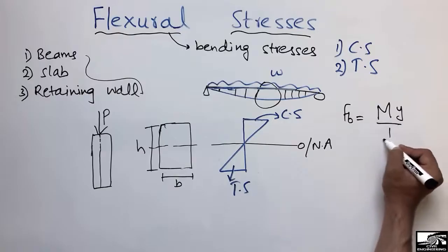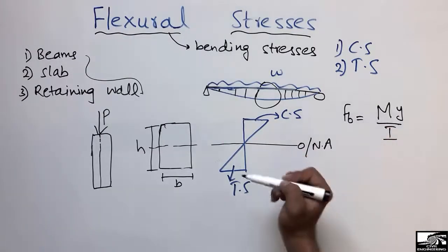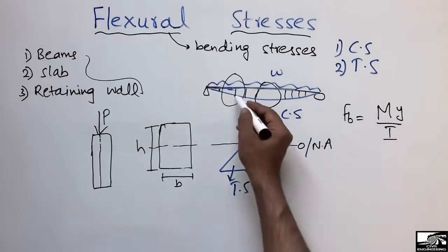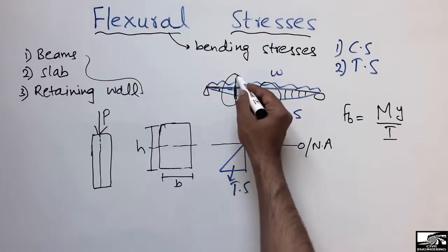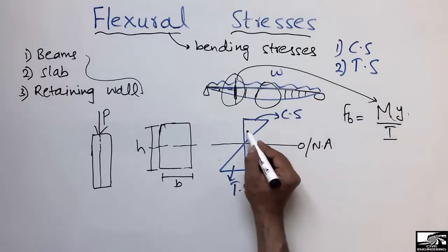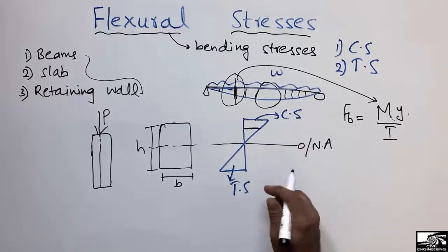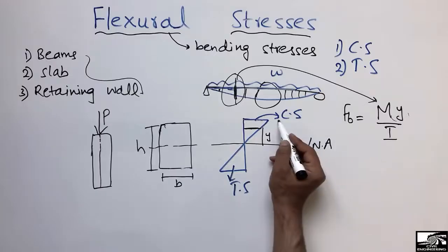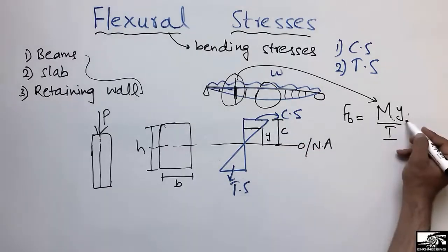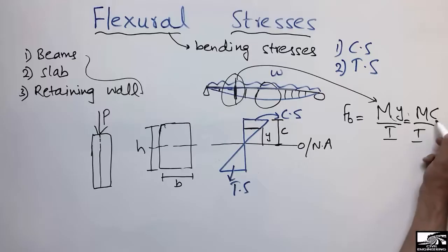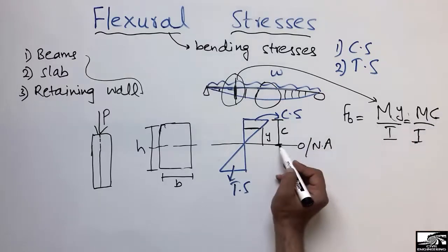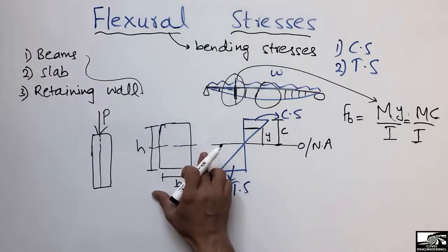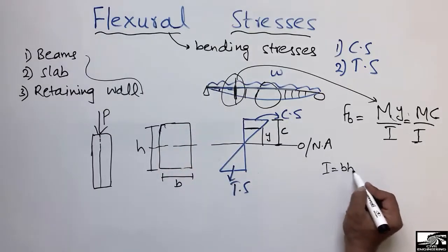We can find the flexure stresses using the formula: flexure stress equals M times y divided by I, where M is the bending moment at the point of interest, y is the distance from the neutral axis to the point where you want to find the stresses, and I is the moment of inertia. If you are interested in the maximum stresses at the top or bottom, y becomes c — the maximum distance from the neutral axis — so the formula becomes Mc/I. For a rectangular beam, the moment of inertia is bh³ over 12.